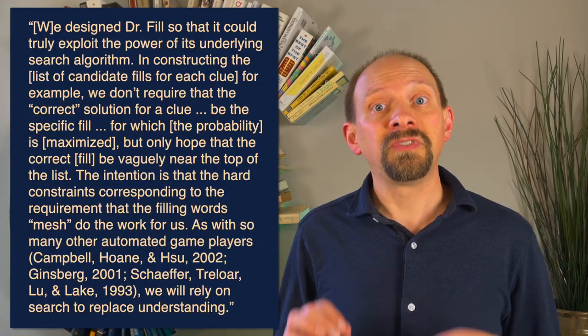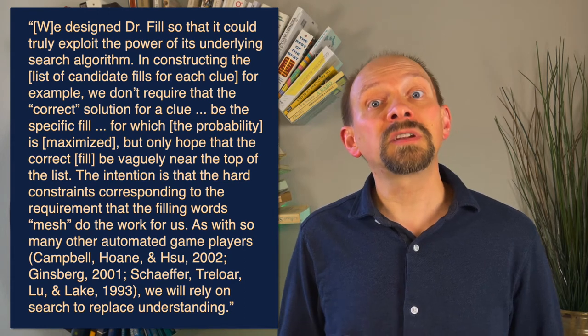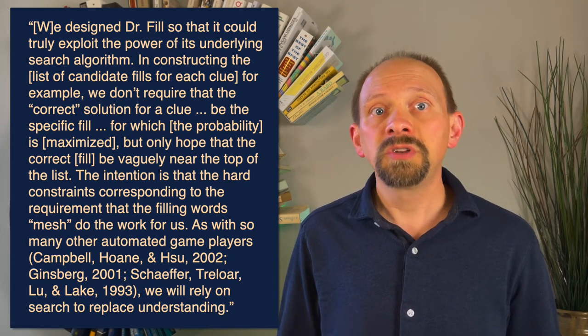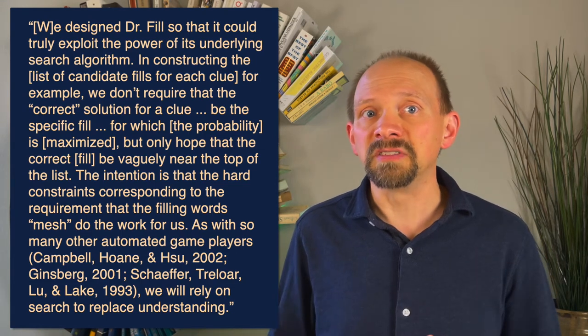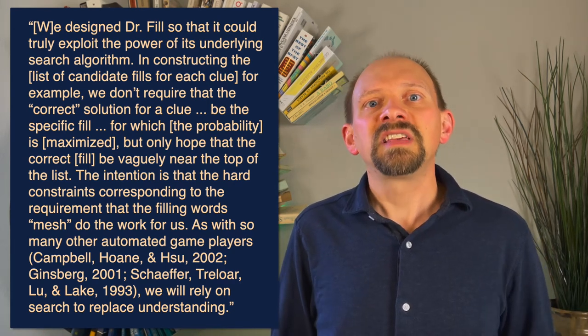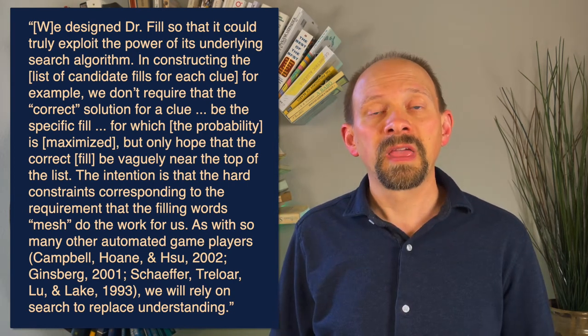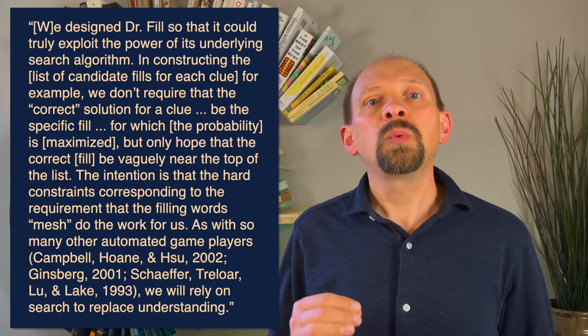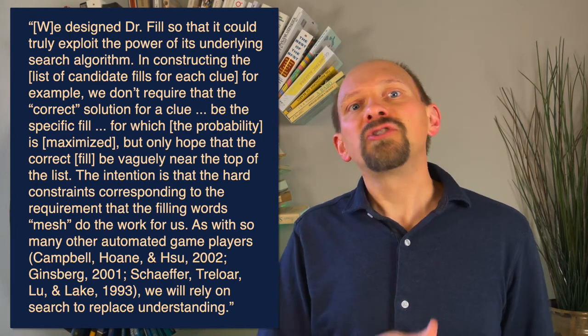We designed Dr. Phil so that it could truly exploit the power of its underlying search algorithm. In constructing the list of candidate fills for each clue, for example, we don't require that the correct solution for a clue be the specific fill for which the probability is maximized, but only hope that the correct fill be vaguely near the top of the list. The intention is that the hard constraints corresponding to the requirement that the filling words mesh do the work for us. As with so many other automated game players, we will rely on search to replace understanding. In other words, Ginsberg largely ignored the language aspect of crosswords, and instead approached them the same way that others had approached games like chess as a search problem.